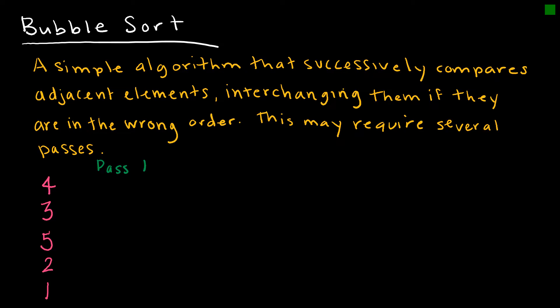So let's look at this together. In pass one, I would look at 4 and 3 and my algorithm would say those are in the wrong order, so now I have 3 4 5 2 1. Still in the first pass, I'd look at 4 and 5 — those are in the right order, so I don't switch them. Then 5 and 2 are not in the right order, so I switch them: 3 4 2 5 1. Then 5 and 1 are not in the right order, giving me 3 4 2 1 5.